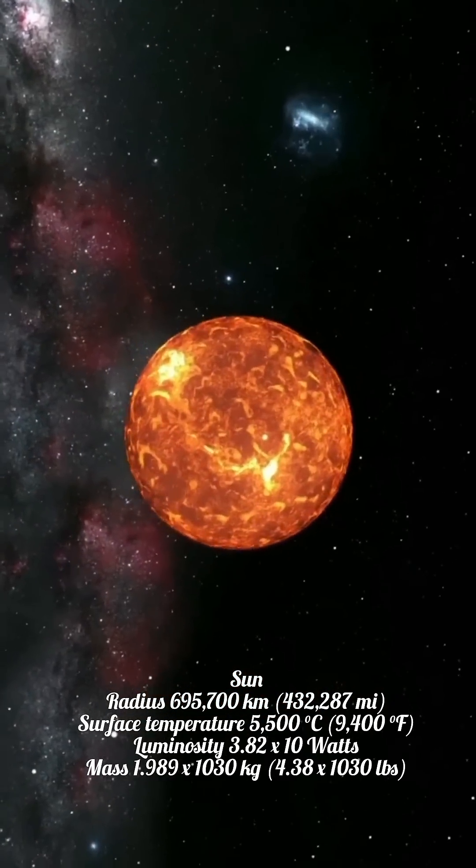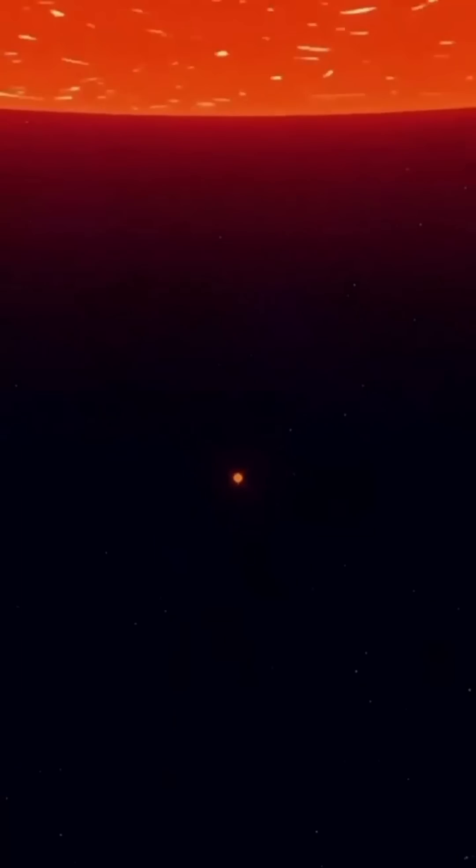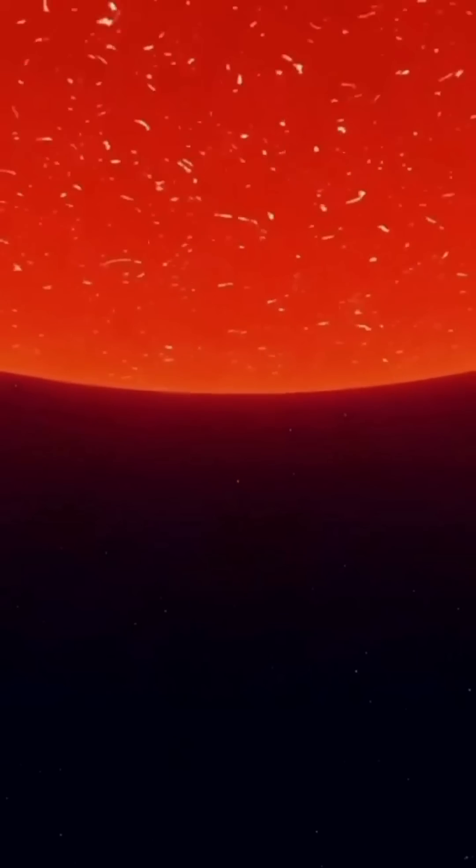However, the star we're talking about makes even the Sun look tiny. We're referring to the red supergiant star Stevenson 2-18, located 200,000 light-years away from Earth.